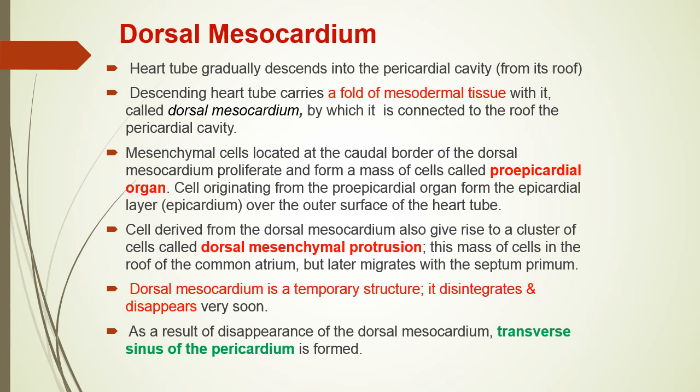Dear friends, I am starting with the dorsal mesocardium, which is a temporary structure formed when the heart tube descends from the roof of the pericardial cavity into the cavity of the pericardium. As it descends, it takes with it a curtain-like double-layered mesodermal fold of tissue which is known as dorsal mesocardium.